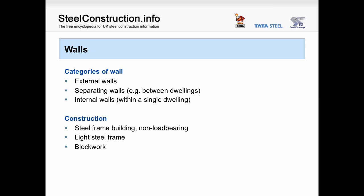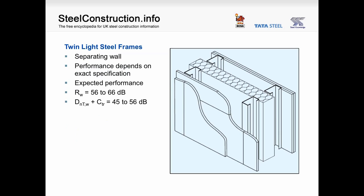For this presentation we are talking about steel frame buildings, where walls will generally be non-load bearing, giving the designer a choice of wall construction type. The first example is a twin light steel frame separating wall, suitable for a separating wall within a residential property. The construction uses a twin light steel frame with insulation between the frames and two layers of plasterboard on each face. Based on typical specifications, sound insulation for this wall type is expected to be between RW 56 and 66, or DnT plus CTR between 45 and 56 dB.